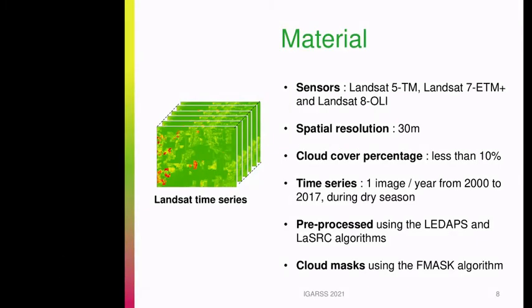Optical time series acquired by Landsat 5 TM, Landsat 7 ETM+, and Landsat 8 OLI from 2000 to 2017 were used in this study. The spatial resolution is 30 meters. Images were selected based on cloud cover less than 10% and based on the season — during the dry season from May to October, when logging activities occur. Three scenes were necessary to cover the entire study area.